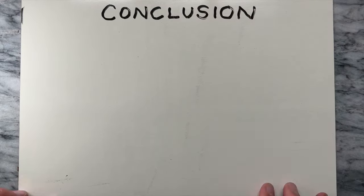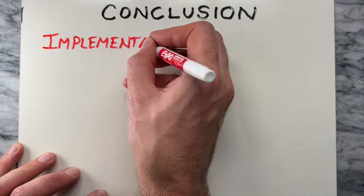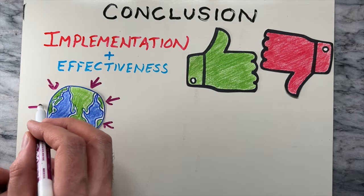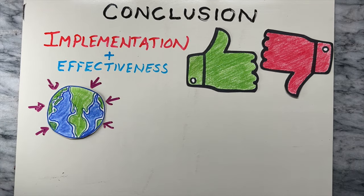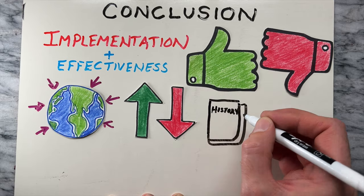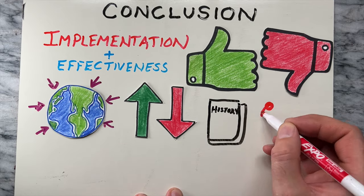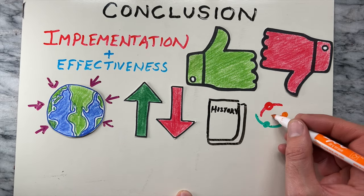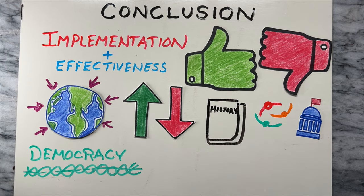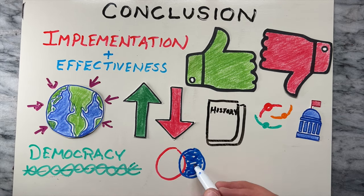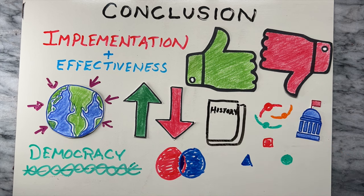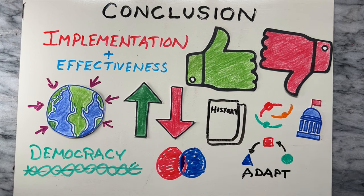It's important to keep in mind that the implementation and effectiveness of these democracy types can vary widely from one country to another. Each type has its strengths and weaknesses, and the choice of a democratic system often depends on historical, cultural, and political factors. Democracy continues to evolve, and different countries may adopt hybrid systems or adapt their democratic institutions to better suit their needs.